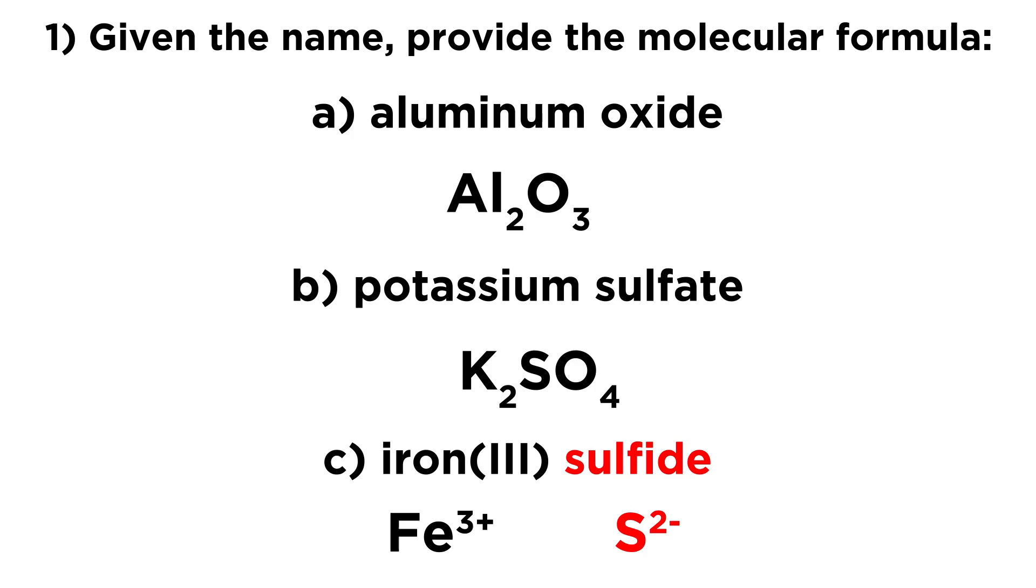And then sulfide, just like oxide, is S two minus. Sulfur needs to gain two electrons to attain noble gas electron configuration. So that is the sulfide ion.